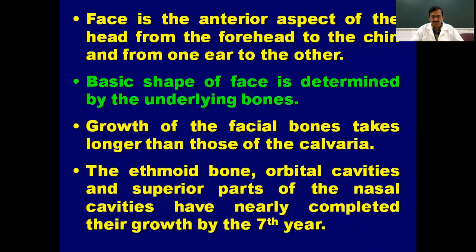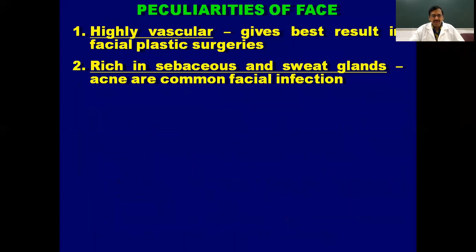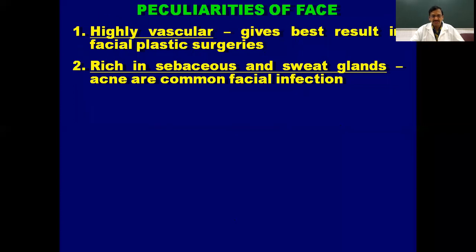The calvaria, ethmoid bone, orbital cavities, and superior part of the nasal cavities have nearly completed their growth by the age of seven years. There are also some peculiarities related to the facial structure.